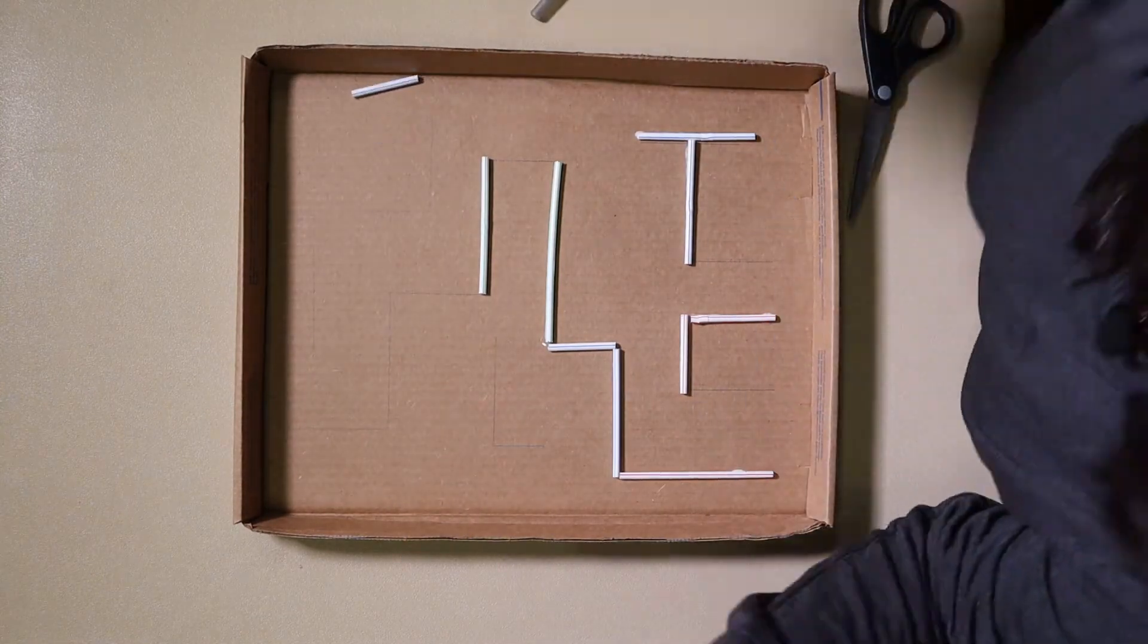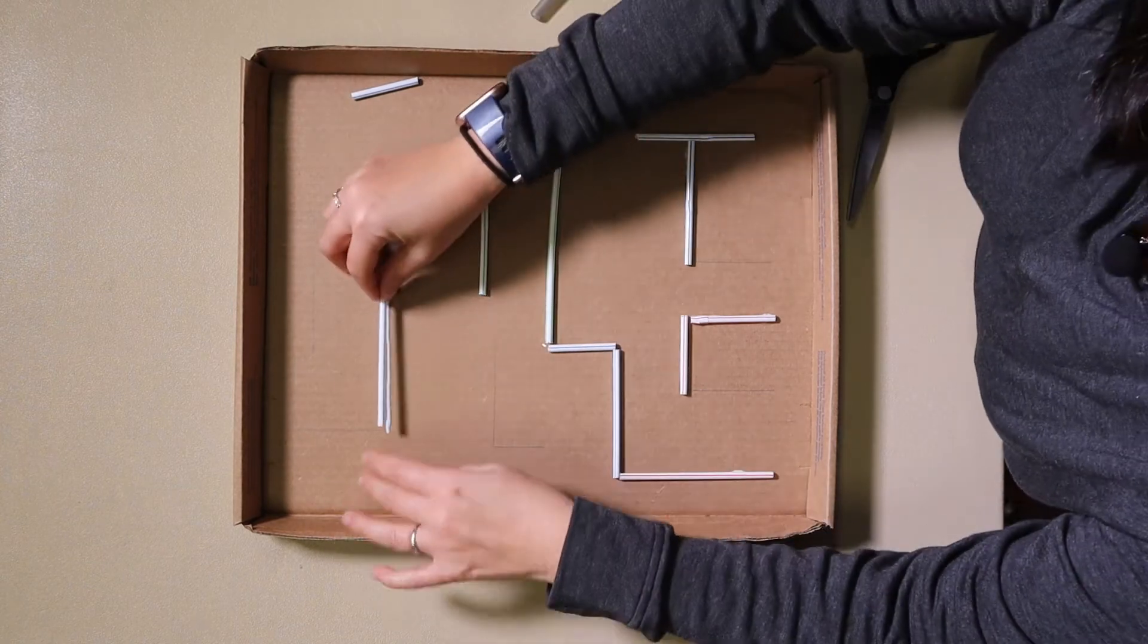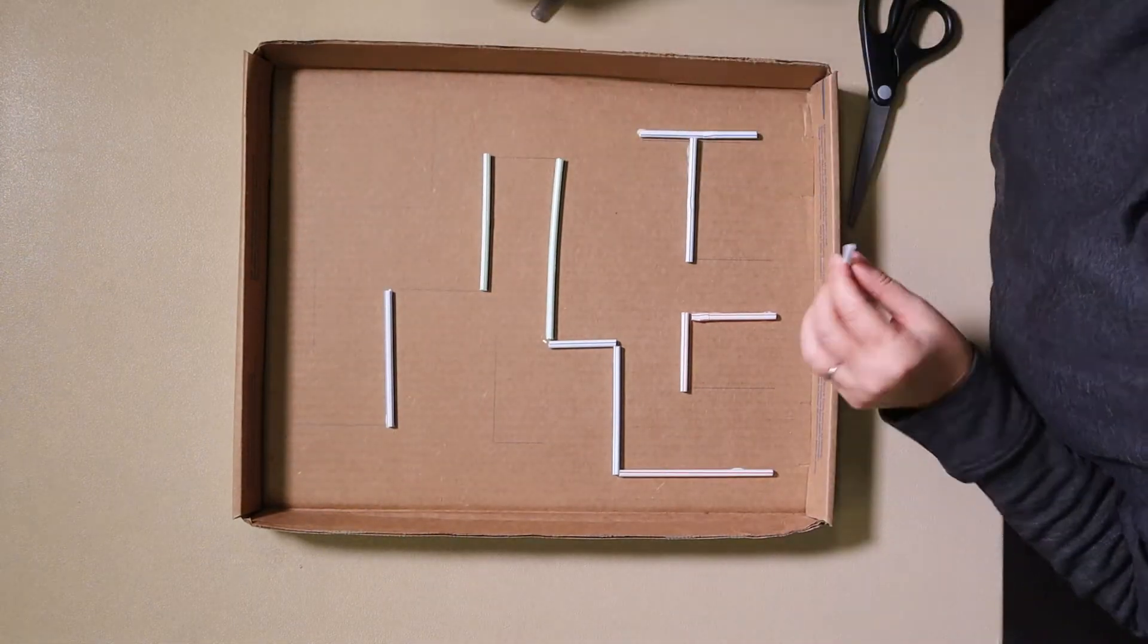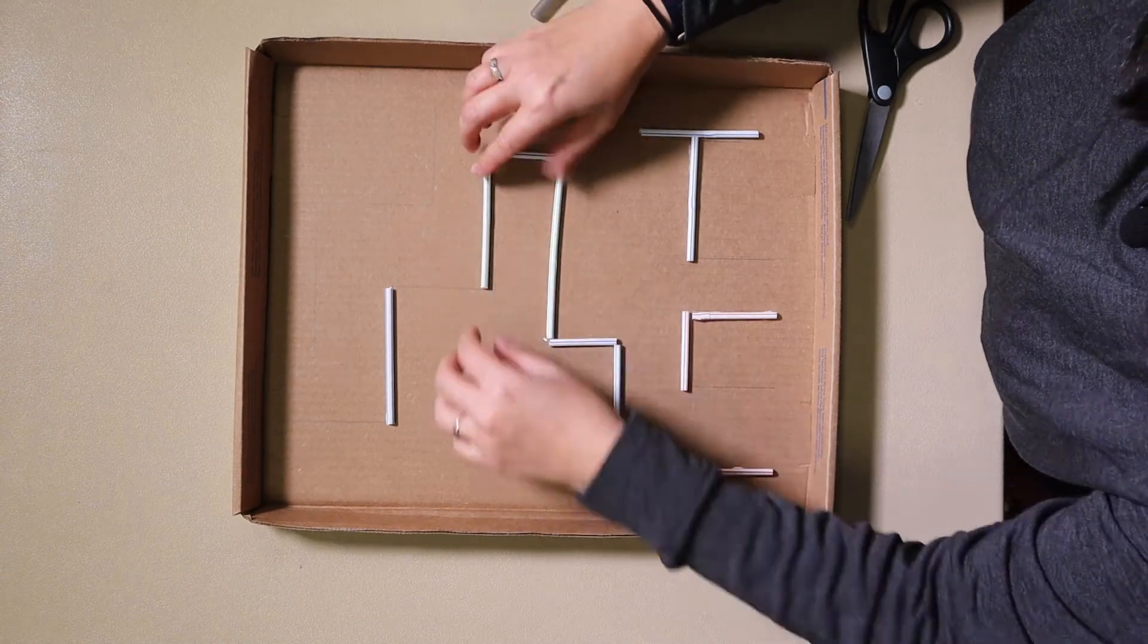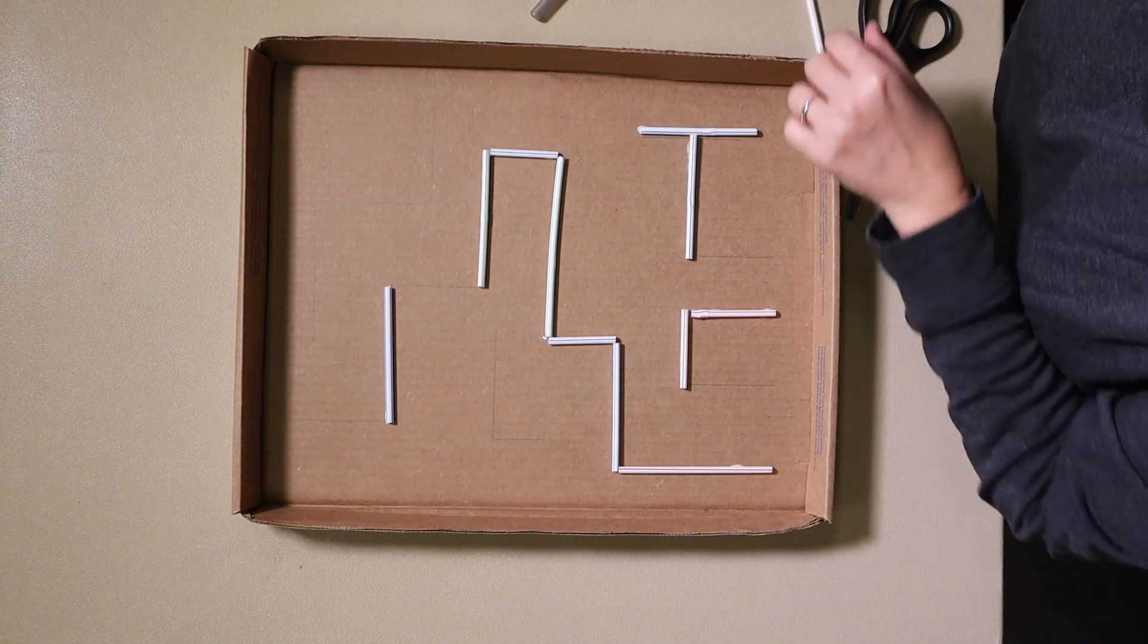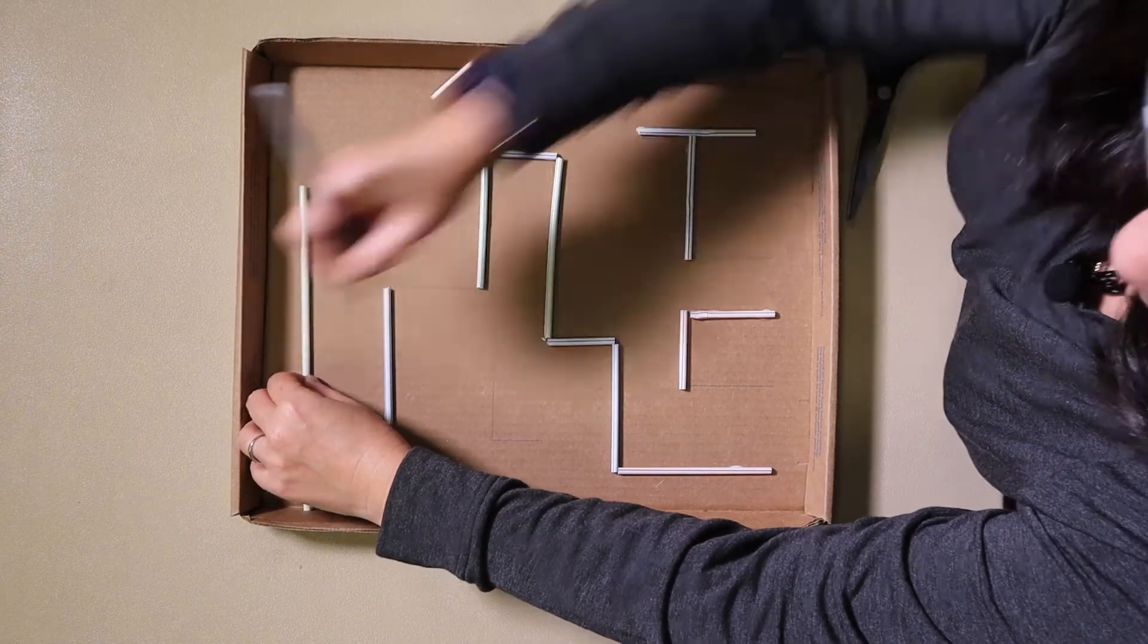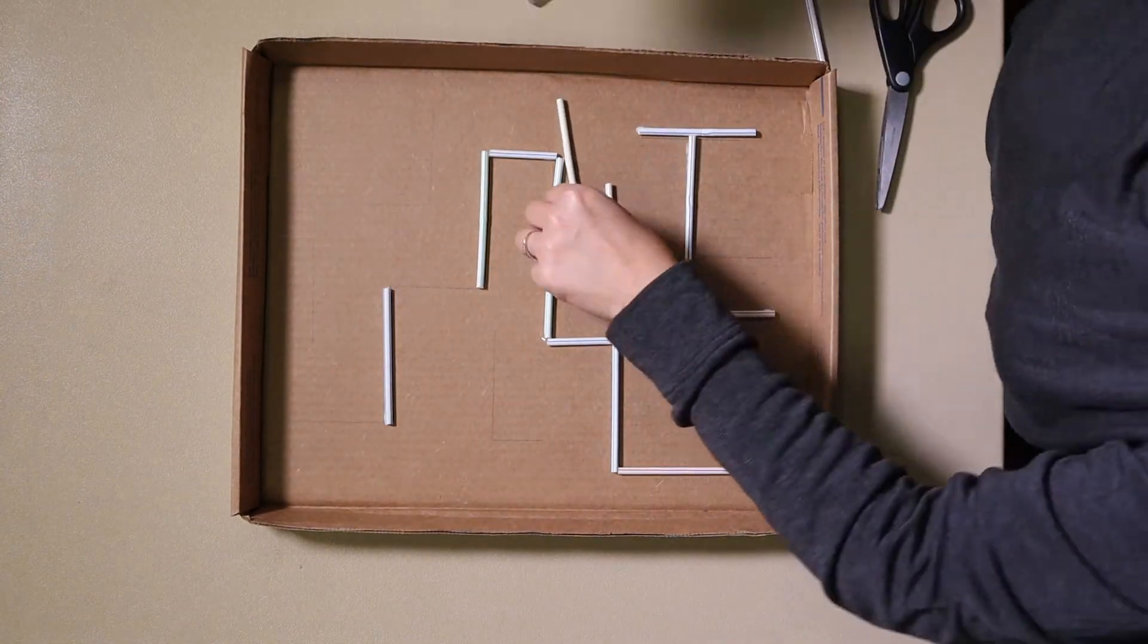Making a marble maze will help you understand the first law of motion. The marble will sit still inside the box until you tilt the box. The force of gravity will pull the marble down an incline. If the marble hits a straw, the straw will exert a force to steer or stop the marble.